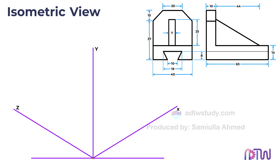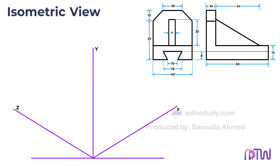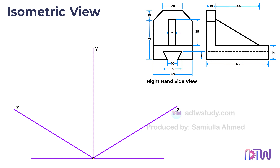Next we need to decide whether to draw the front view in the XY plane or the YZ plane. It's important to remember that the front view should only be drawn in these two planes and never in the XZ plane. The top view of the object is always drawn in the XZ plane. Since we will be using the first angle method to solve all the problems, the left-hand side figure will be the right-hand side view of the object, while the left side figure will be the front view. Remembering these important points will help us accurately construct the isometric view.